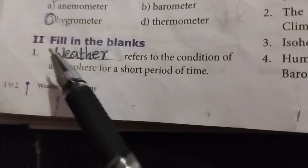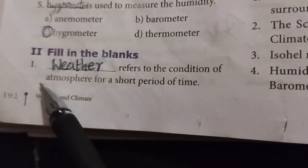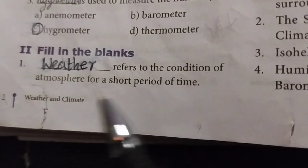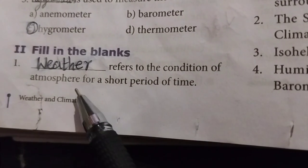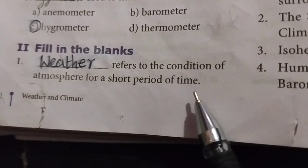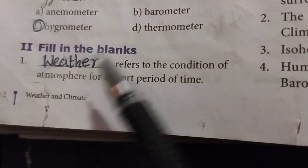Section 2: Fill in the blanks. Number 1: What refers to the condition of the atmosphere for a short period of time? The answer is weather.